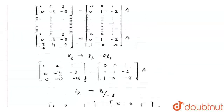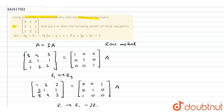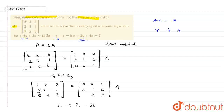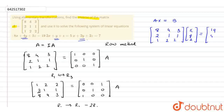We are also given a set of equations to solve: 8x + 4y + 3z = 19, 2x + y + z = 5, and 5x + 2y + 2z = 7. We will form the matrix equation Ax = B, where A is [8, 4, 3; 2, 1, 1; 1, 2, 2], x is the column vector [x, y, z], and B is [19, 5, 7].